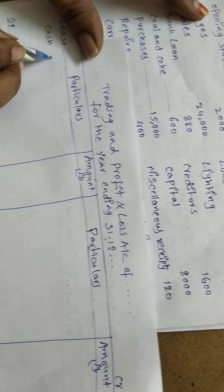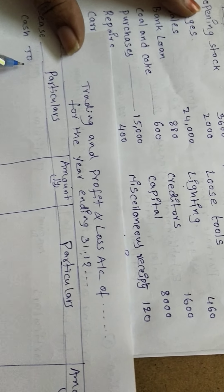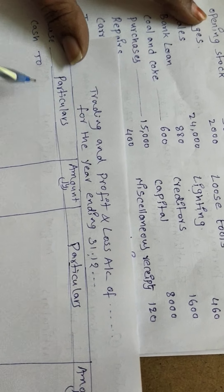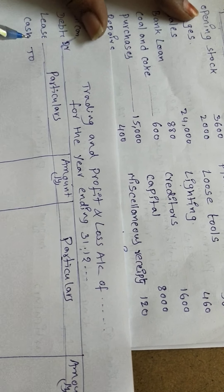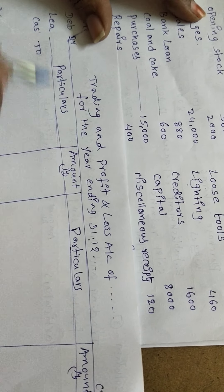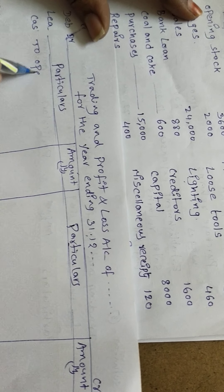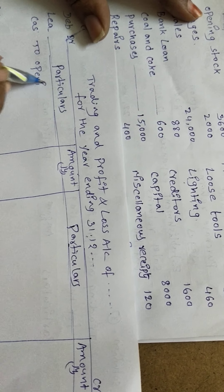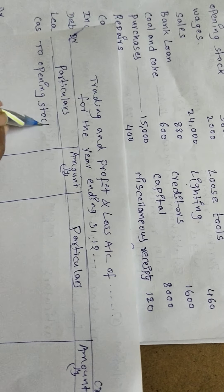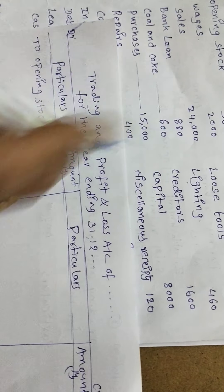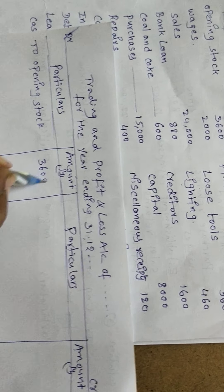First item on the debit side: opening stock. We write 'To opening stock' — amount three thousand six hundred.